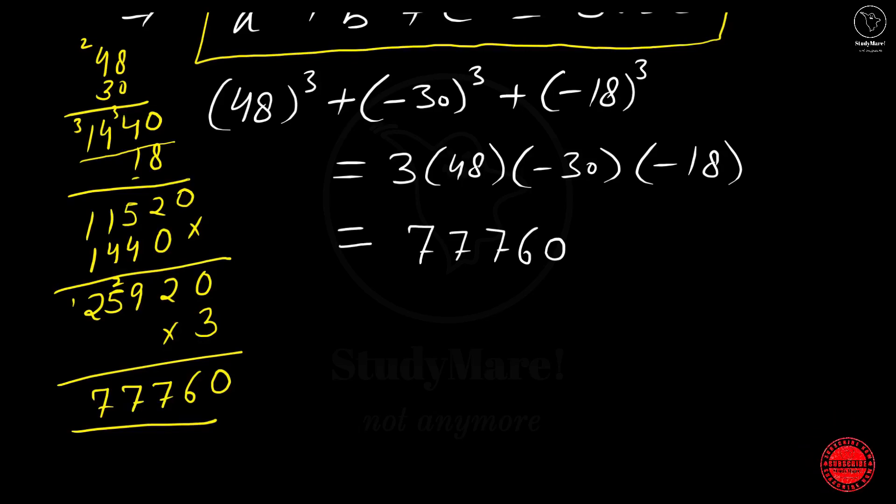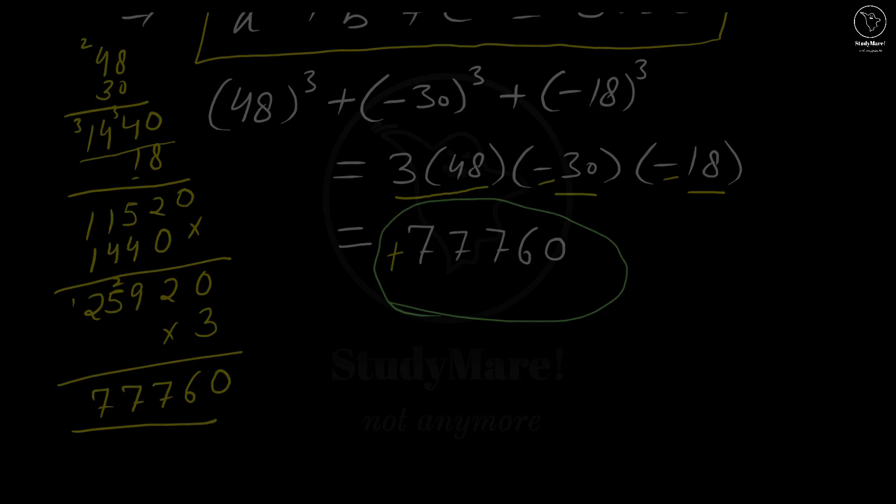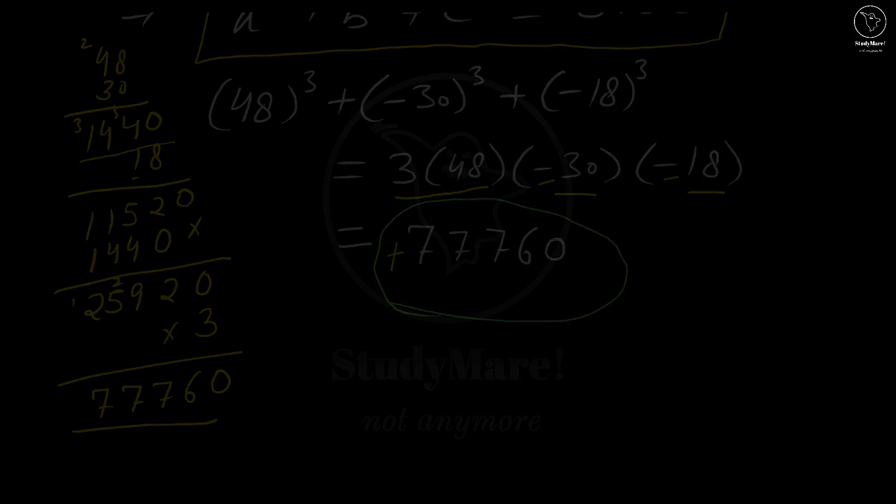So you see, rather than calculating cubes three times and then adding, we simply got the answer by multiplying 3 with 48, 30, and 18. Here it was minus, here it was minus, so minus into minus is plus, and that is why we have this plus here. So you see, using the identities in the right way and with the right procedure, you can easily solve the questions rather than getting caught up in its complexities or complex calculations. Just practice it, remember the identities, and also how to use it.